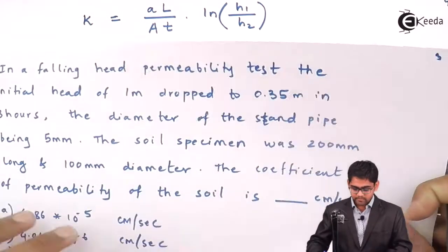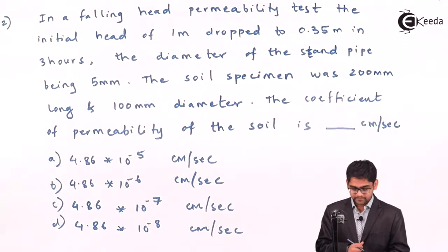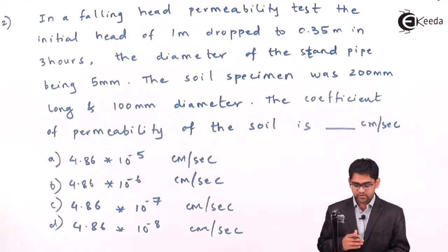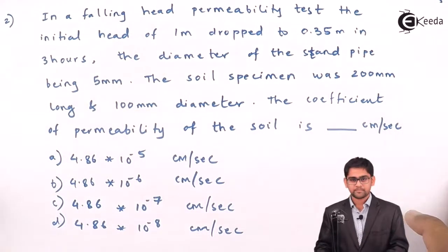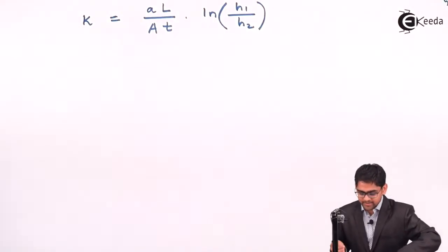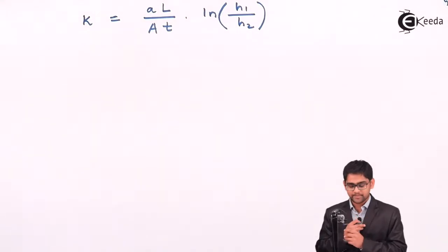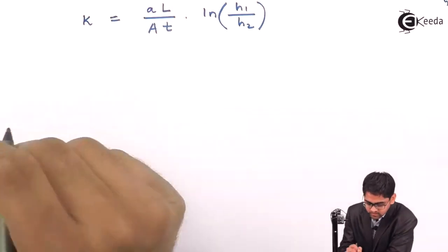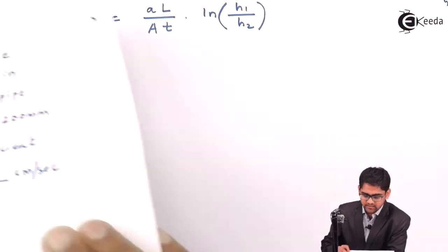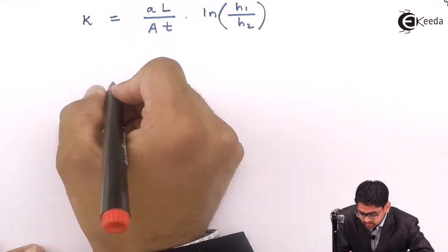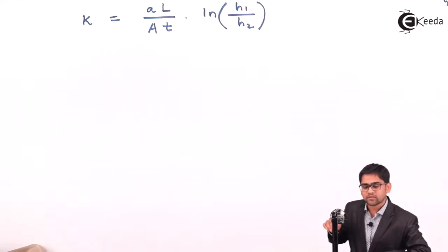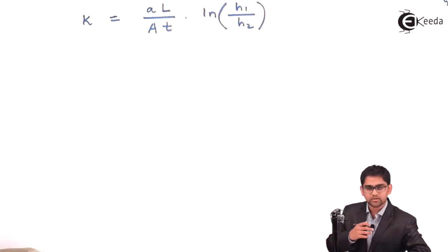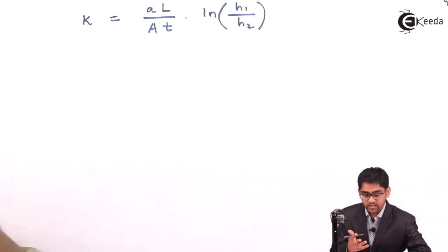By looking at the question, you need to practice because in the constant head test the formula is relatively easy — Q equals KIA — but in the falling head test it really breaks your head. Even if you don't remember the formula, we can proceed by deriving it from the basic concept. I assume you don't remember the formula and we will go ahead and derive it. If you recollect the basic definition of the falling head permeability test — the head is consistently falling with respect to time — we can derive the formula in very quick time, within 2–3 minutes.